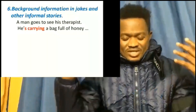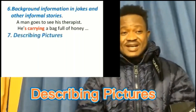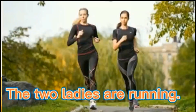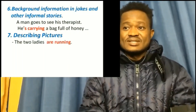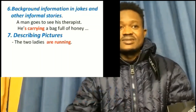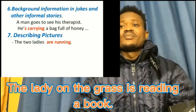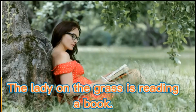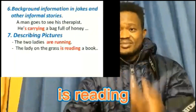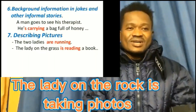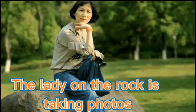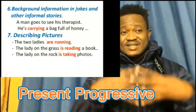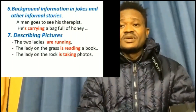We also use the present progressive for describing pictures. Look at a picture and describe what you see: 'The two ladies are running.' 'The lady on the grass is reading a book.' 'The lady on the rock is taking photos.' These are all present progressive descriptions of what is happening in the picture.